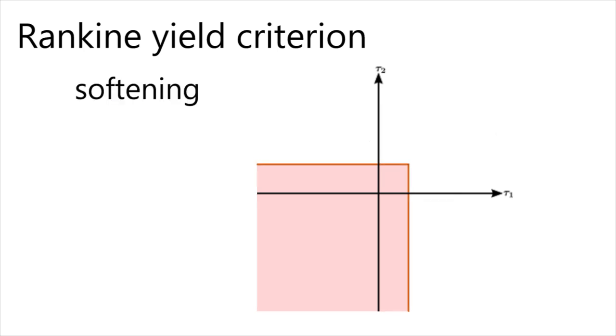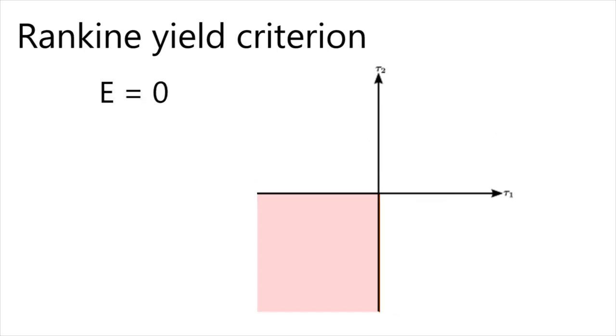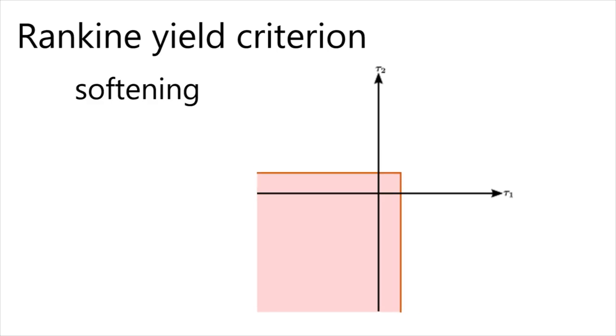We use a softening rule to record material damage. When the material strain reaches zero, we set the Lamé parameters to zero for the completely failed material.